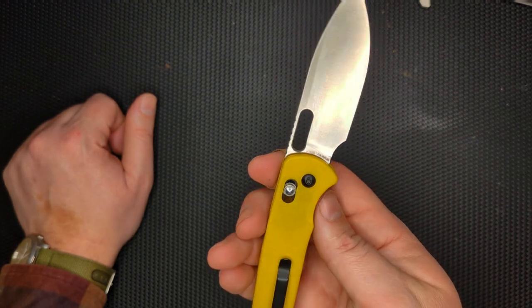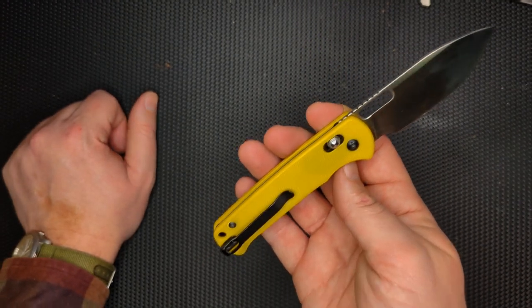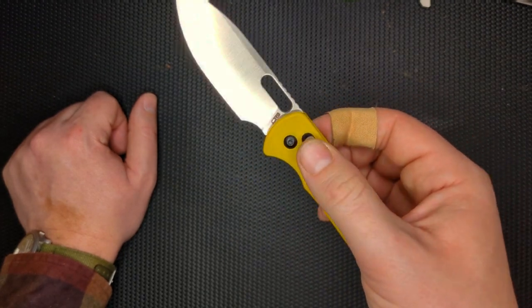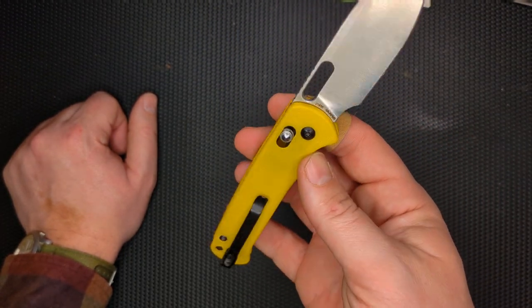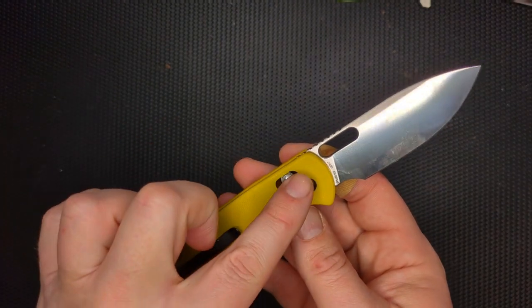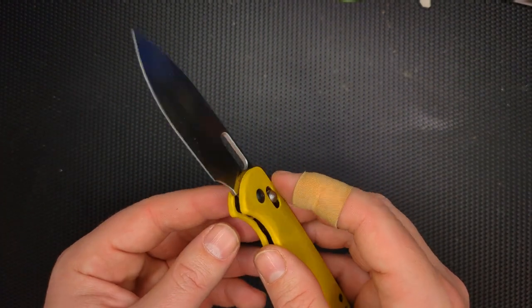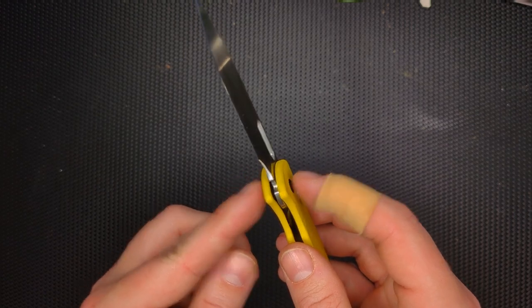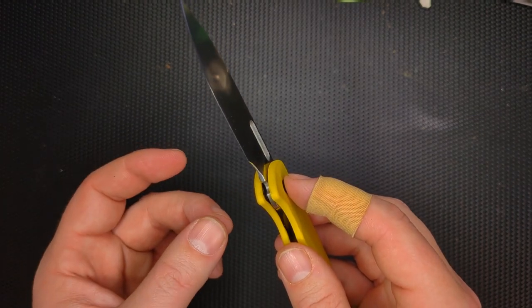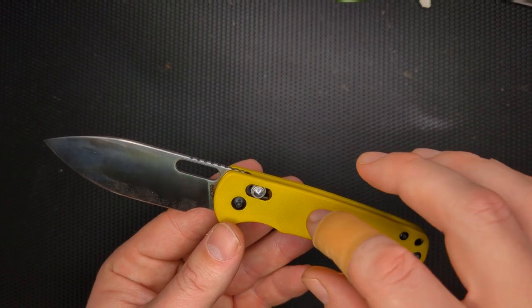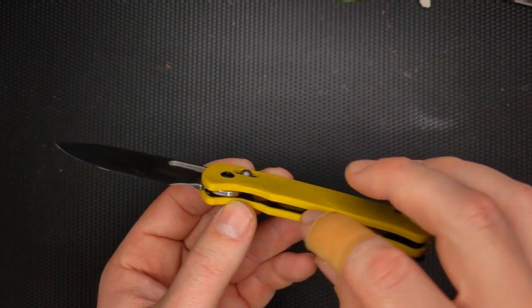I did a disassembly and maintenance video of it earlier in the week. You can go over there and take a look at the insides of this. There was a crazy amount of Loctite in the pivot. It wasn't hard to unscrew them. But what happened is that these screws both go into like a barrel.